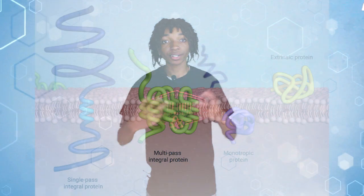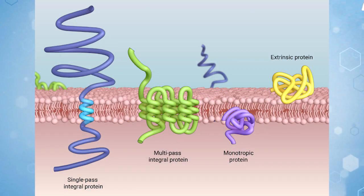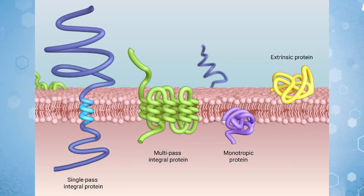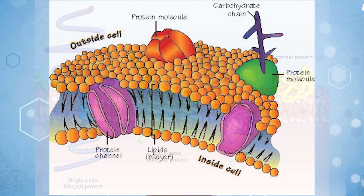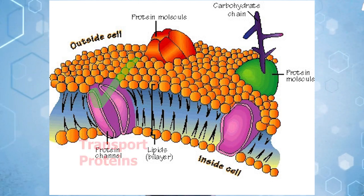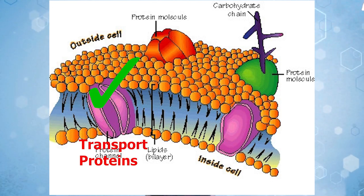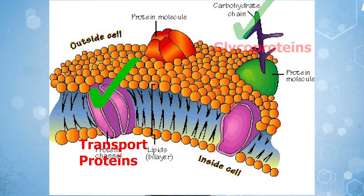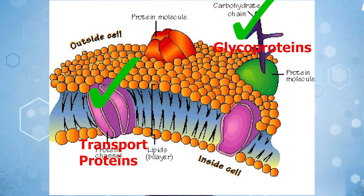The cell membrane also includes proteins, as we discussed earlier. There are several specific proteins for specific functions, but for simplicity, proteins are used to help get materials through the cell membrane or to help recognize each other and specific molecules.